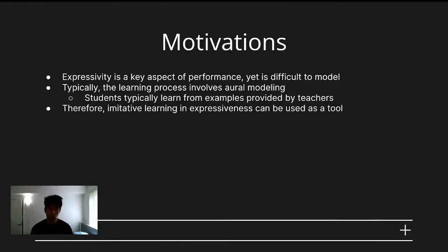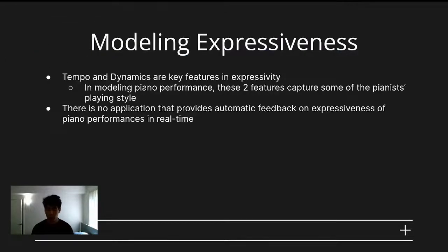The motivation of this paper at a high level is to determine the best method for modeling expressivity to display useful feedback to a performer in real-time. Expressivity is a key aspect of performance, but is typically difficult to model as it is an all-encompassing term for many different dimensions of performance. Typically, the process for improving expressivity involves aural modeling, which in easier terms is learning from examples provided by a teacher. In order to model expressivity, we took this idea of aural modeling to indicate that imitative learning can be extended to learning expressivity. In doing so, we had to make some assumptions about the potential best dimensions by which expressiveness can be defined. For piano performance, we found that tempo and volume were two features that capture much of a pianist's playing style and expressivity.